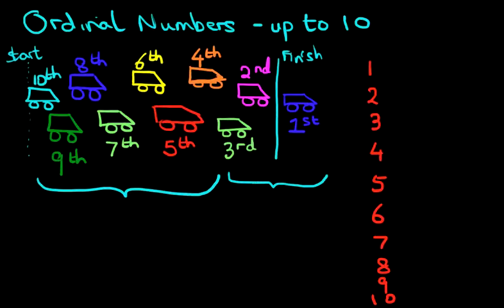Now how do we write them down? Well, it's quite simple. The number one, we put an ST. Number two is with an ND. Number three, RD. And it's how you say it, okay? It sounds exactly how you say it and that's how you write it. First, it's an ST. Second, it's with an ND. Third, RD.